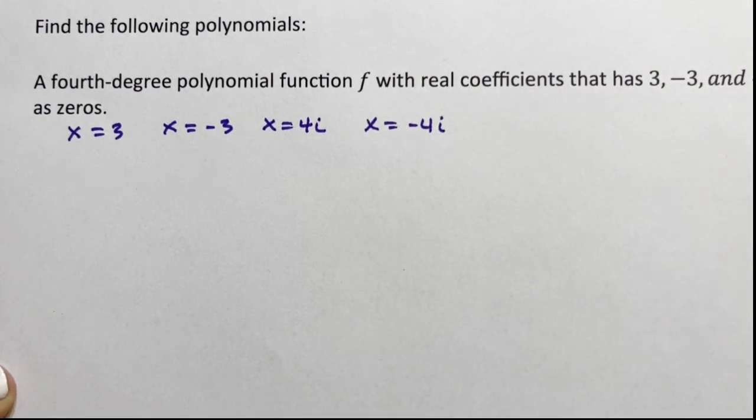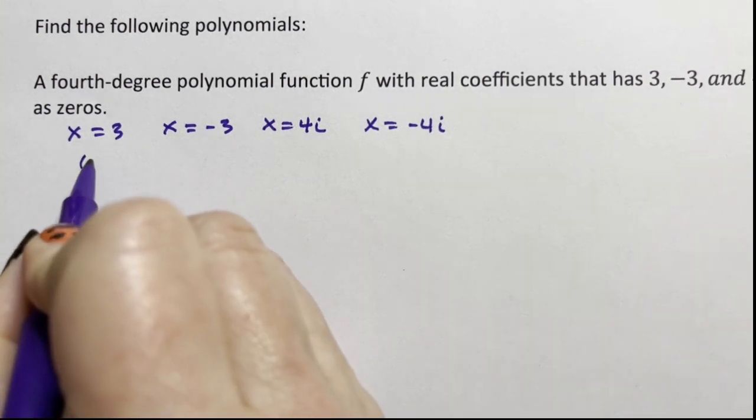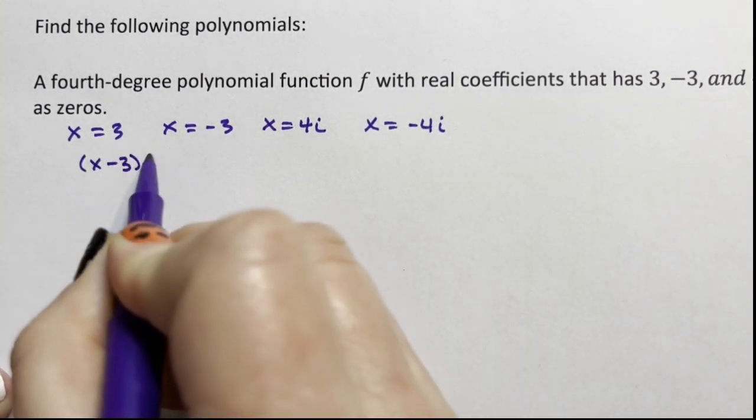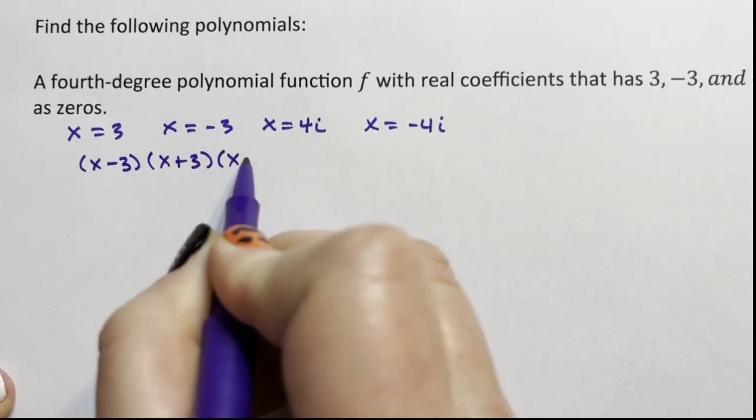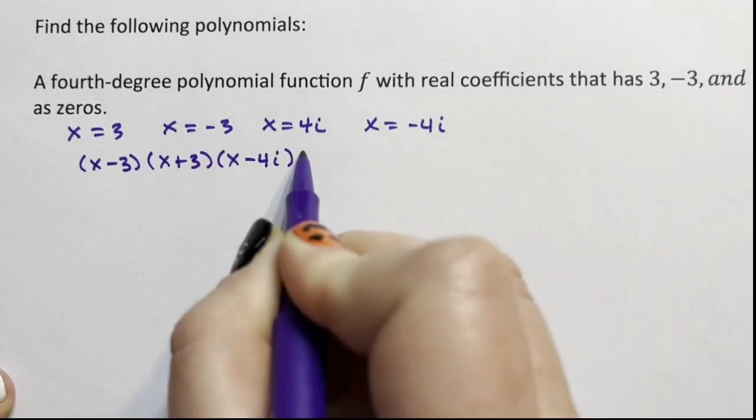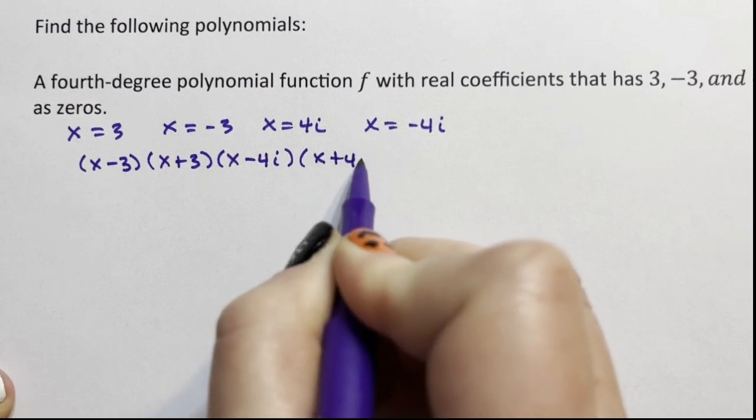So to get what we're going to multiply, we need to subtract each of these over. So we have (x - 3) for this one, (x + 3) for this one, (x - 4i) for this one, and (x + 4i) for that one.